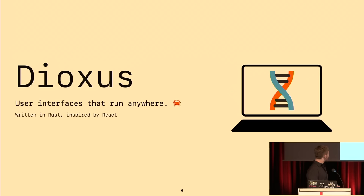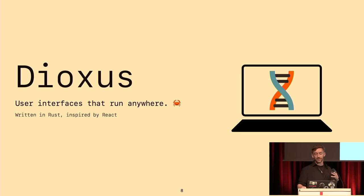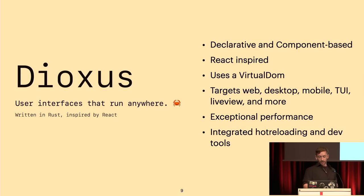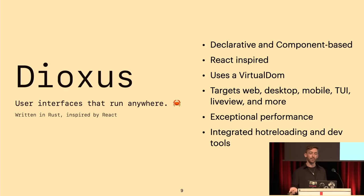That's where Dioxys comes in. With these three pillars in mind, I spent the past two years — nights and weekends — putting tons of hours into building Dioxys. At a glance, Dioxys is declarative and component-based, inspired by React for better or for worse, and it uses a virtual DOM. It targets the web, desktop, mobile, the terminal, live view, and a bunch more targets. It has exceptional performance — top of the pack. We also support integrated hot reloading and some spiffy dev tools.